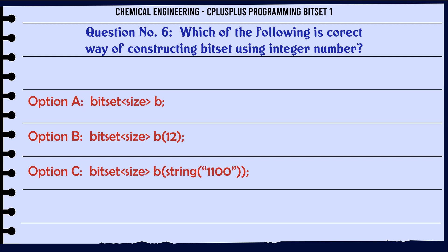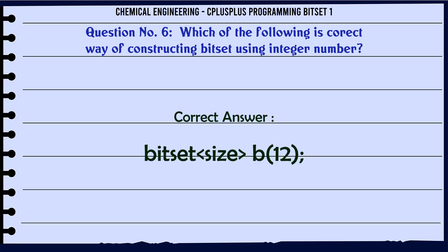Which of the following is the correct way of constructing a bitset using an integer number? A. bitset<size> B. B. bitset<size> B(12). C. bitset<size> B(string("1100")). D. bitset<size> B(float(12)). The correct answer is bitset<size> B(12).